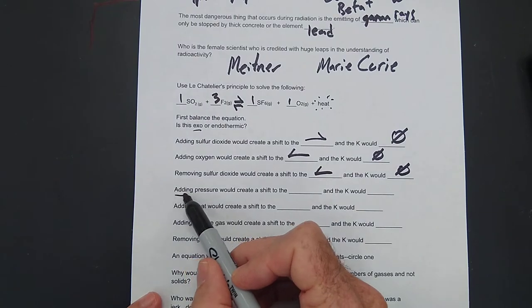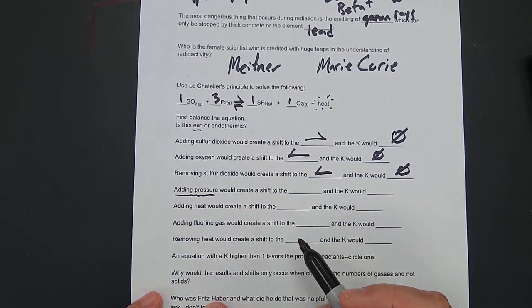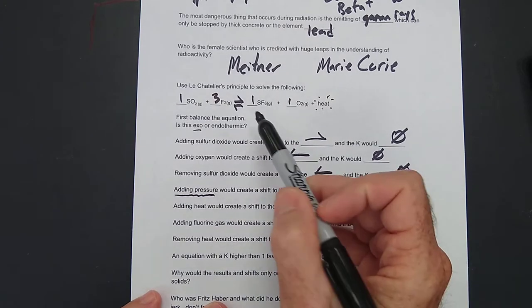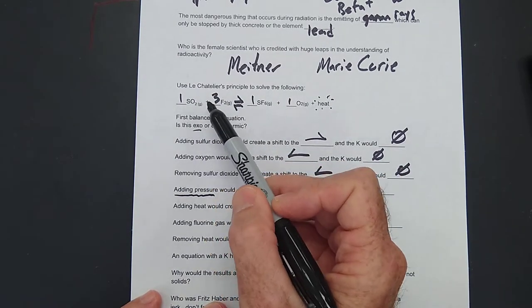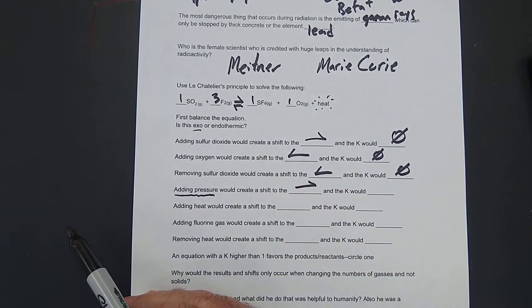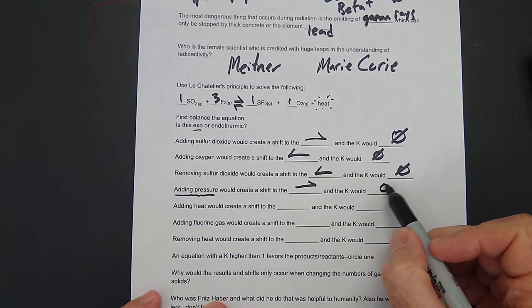Adding pressure would create a shift to the, okay. Adding pressure means that you have less gases. So it's going to be a shift to the right. Because see, there's only one, two gas bubbles over here, and there's one, two, three, four gas bubbles over there. And the K would not change.